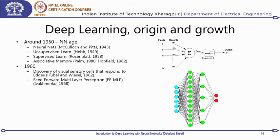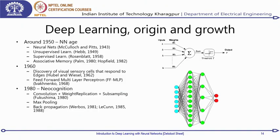The next development was the feedforward multilayer perceptron, which is the standard multilayer perceptron we have studied. In subsequent lectures, we will go into the mathematical depths of it. Around the 1960s also came what is called neocognition — the first theories being proposed in association with neuroscientists for understanding whole images.